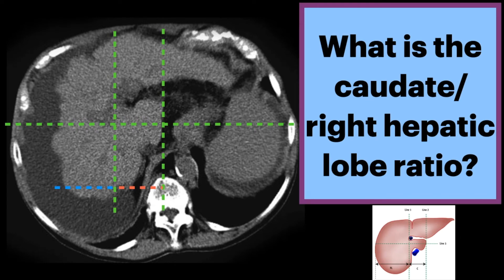There you have it. You now know how to calculate the caudate to right hepatic lobe ratio to help determine if there's cirrhosis.